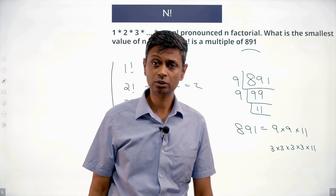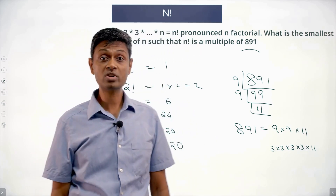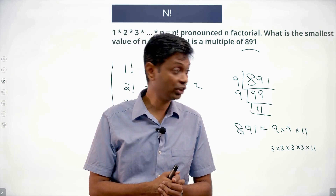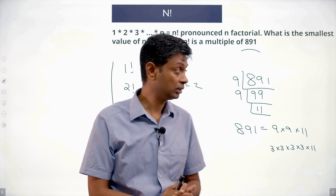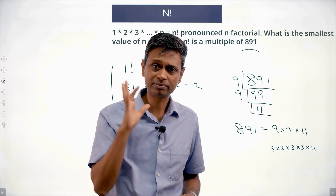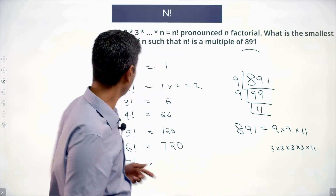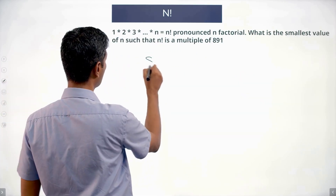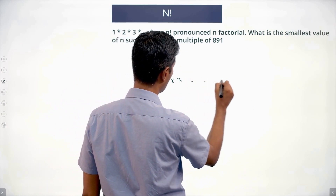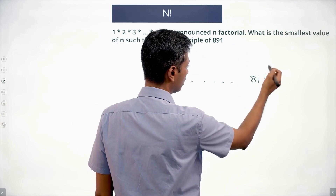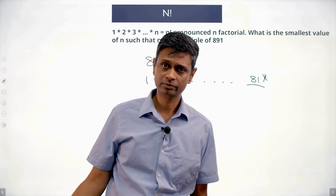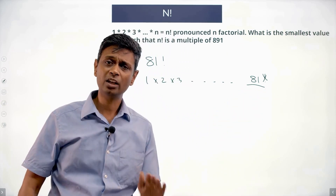So 891 equals 3⁴ into 11. In my factorial I need to somehow get four 3s and one 11. If my factorial contains 3 × 3 × 3 × 3 × 11, I'm through. Since 3⁴ is 81, maybe 81 factorial will work — that is 1 into 2 into 3 all the way till 81.